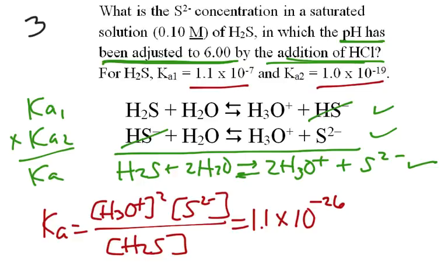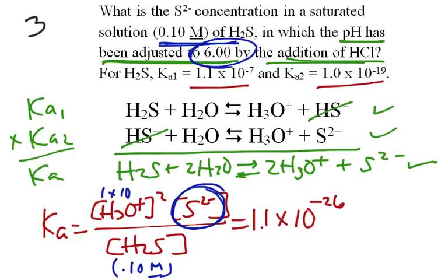Now, we go back to the problem. We have three values here. We're trying to find this one. We're solving for this. [H2S], that's given in the problem. So, we'd substitute this in here. And the [H3O+], since we know the pH, then we know the [H3O+] concentration is 1×10^-6. And that is squared. And then, we'd just have to solve the problem. So, we know this, we know this, we know this. And we're going to solve for the S2- concentration. And those are the three different kinds of problems that we have with diprotic acids.